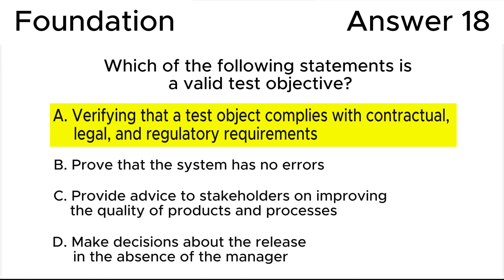We will see the exact quotes for this in the last section of this video. Let's see why the rest of the answers are wrong. Answer B is wrong because it contradicts test principles 1 and 7. The first principle is: testing shows the presence, not the absence of defects. The seventh principle is the Absence of Defects fallacy. We can neither prove that all defects were identified, and of course this statement doesn't relate to test objectives.